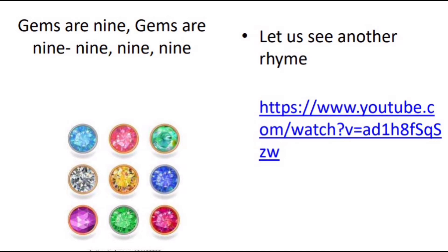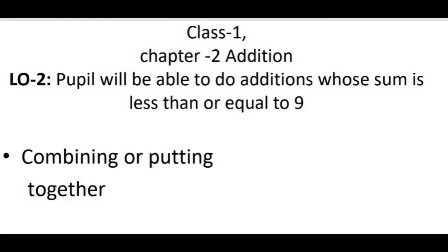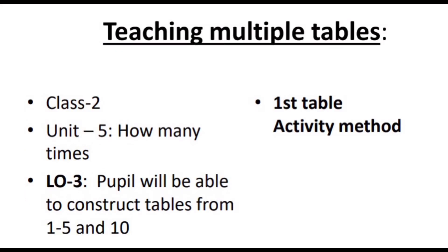There is another rhyme whose link is given in the slide, which is available on YouTube. He then took another concept from Class 2 — the chapter on addition. The learning outcome for this chapter is: children will be able to perform additions whose sum is less than or equal to nine. The approach here is combining or putting together objects.